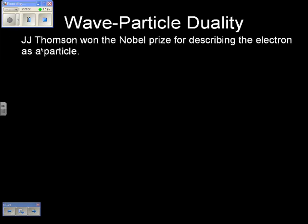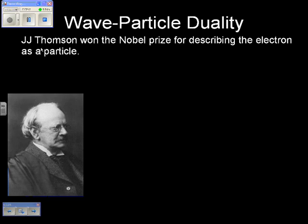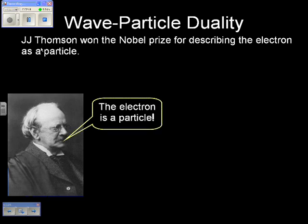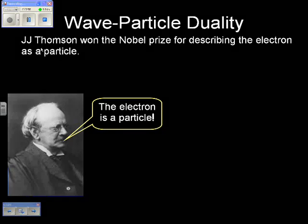Einstein came up with the idea, through the photoelectric effect, that light acts like a particle. He talked about photons coming in and kicking out electrons. Now, in science there's something called reflectivity: if a wave can act like a particle, then a particle should act like a wave. J.J. Thomson discovered the electron using the CRT and talked about it as a particle. He won a Nobel Prize for discovering the electron and talking about it as a particle.